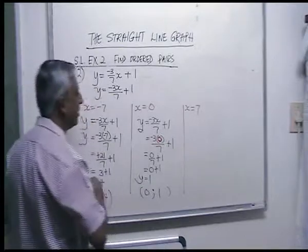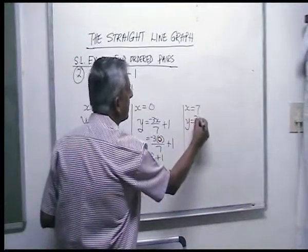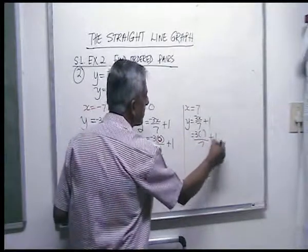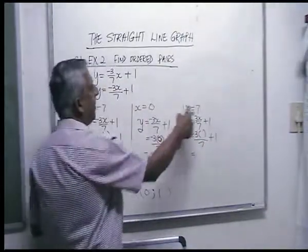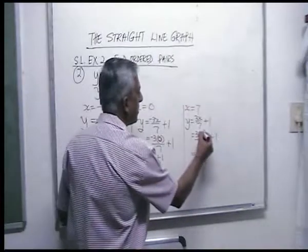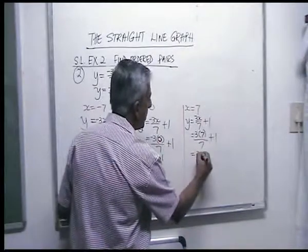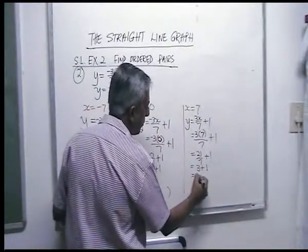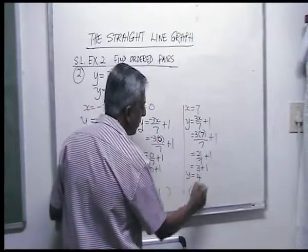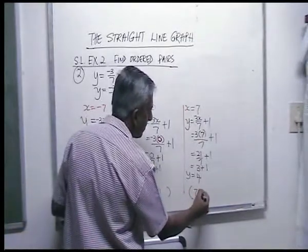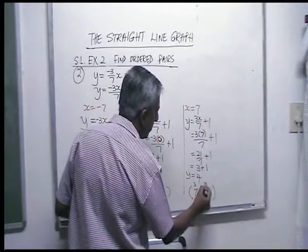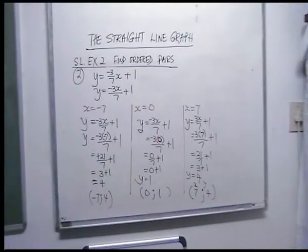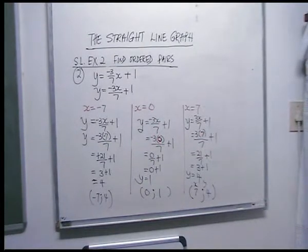Finally, for x is seven: minus three times seven is minus twenty-one — wait, that should be minus three x over seven. Three times seven is twenty-one, over seven plus one. Twenty-one divided by seven is three, three plus one is four. So x is seven, y is four. That's how you find ordered pairs — from the easiest example to one that contains fractions.